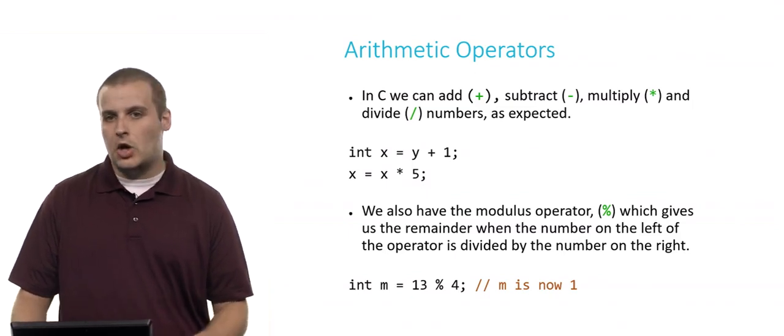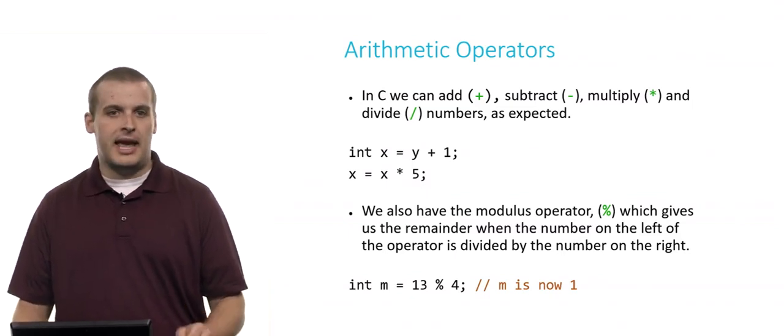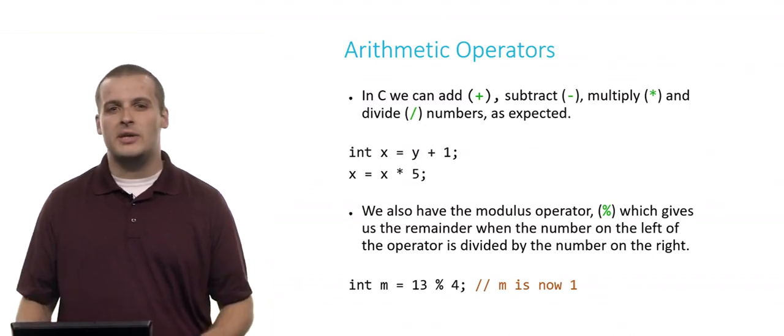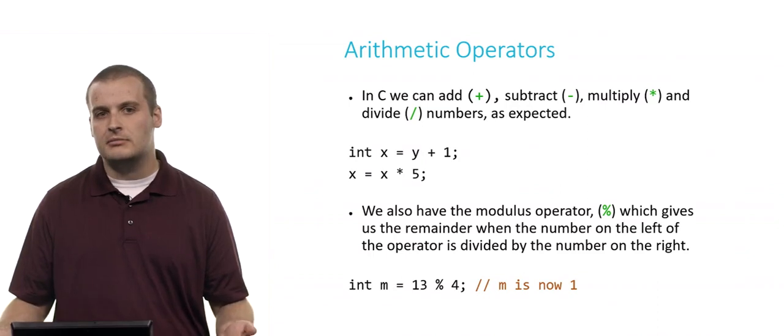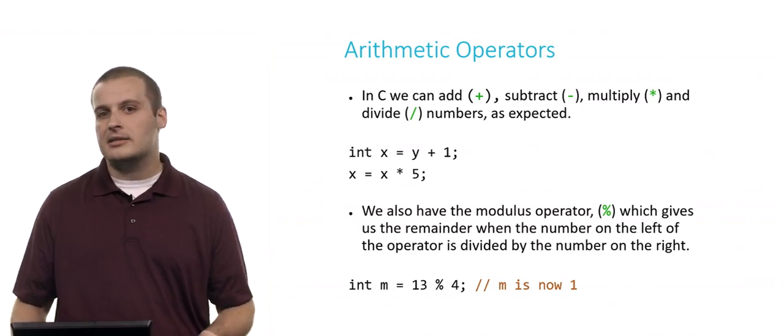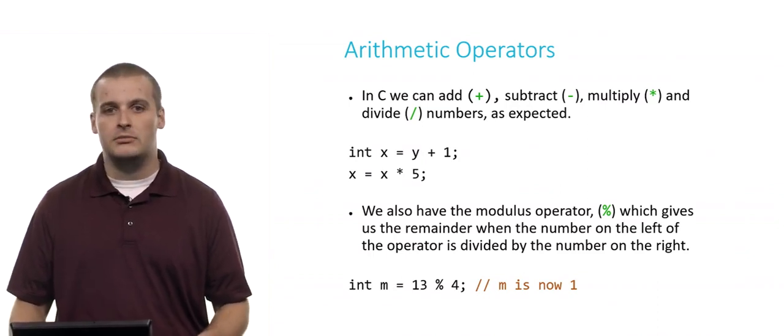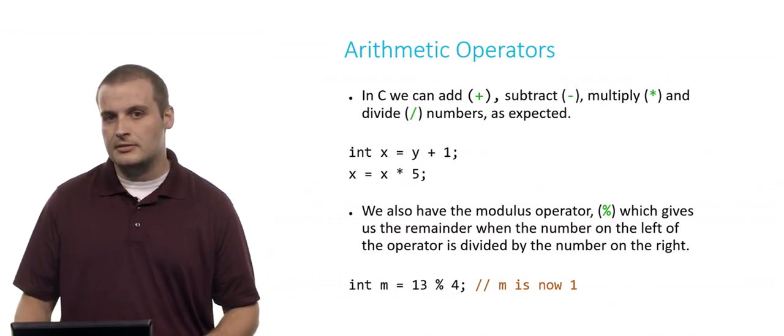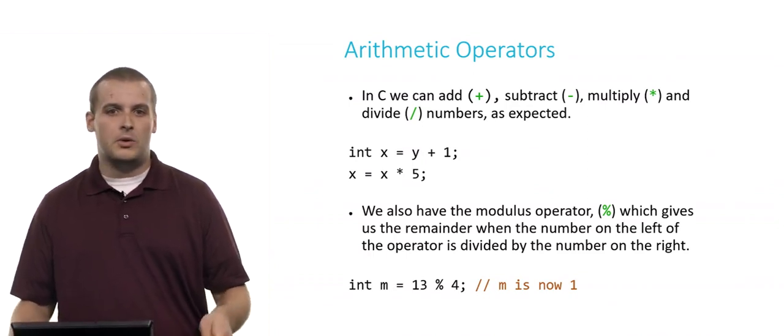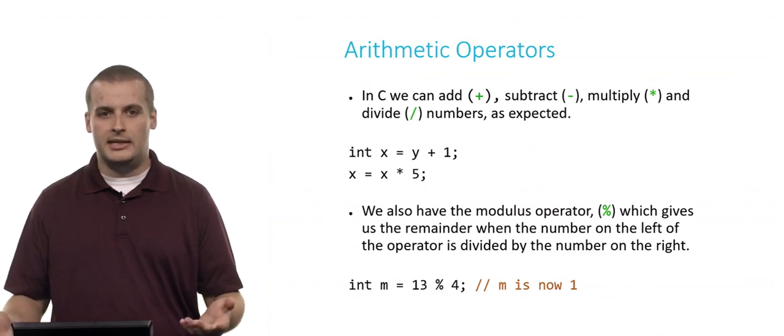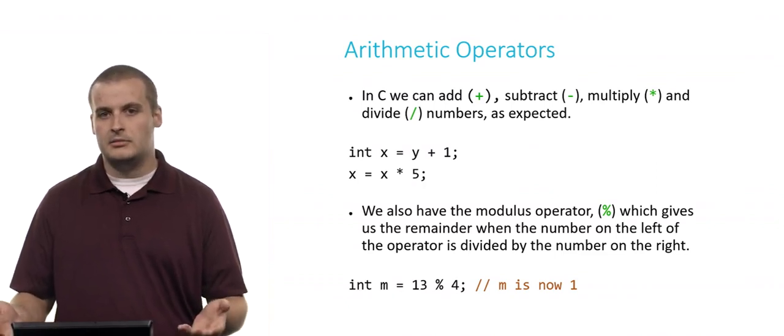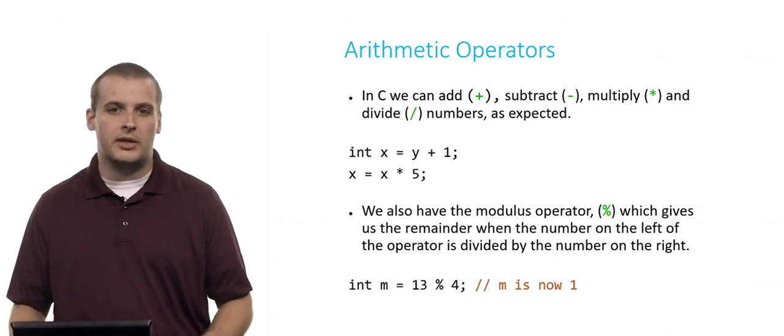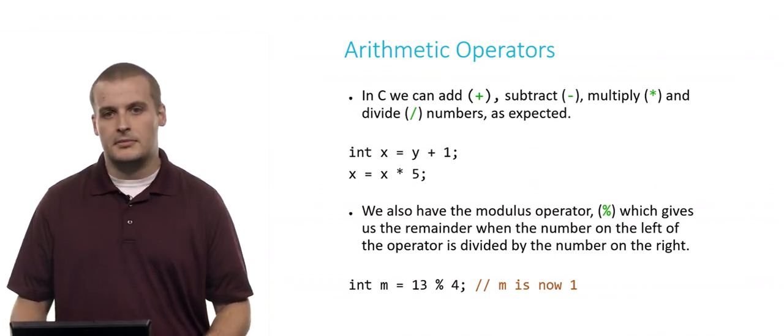Here's a couple of lines of code. We have int x equals y plus 1. Let's assume that somewhere up above this line of code, we had said int y equals 10. What's the value of x after I execute this first line of code? Did you say 11? You'd be right. Why is that? Well, y was 10. So I'm saying int x equals 10 plus 1. 10 plus 1 is 11. So the value 11 gets stored in the variable x. Not too bad, right?